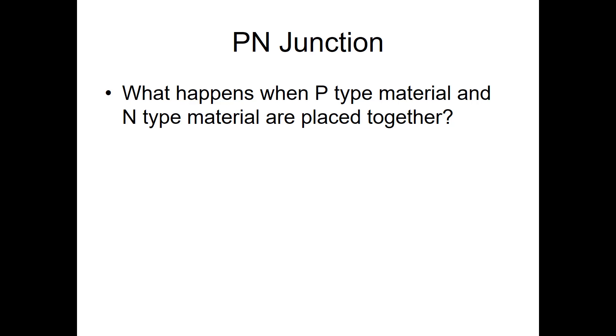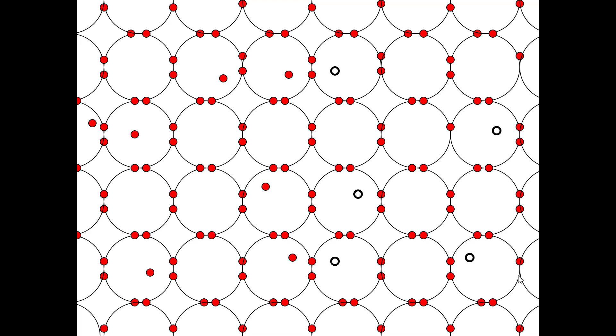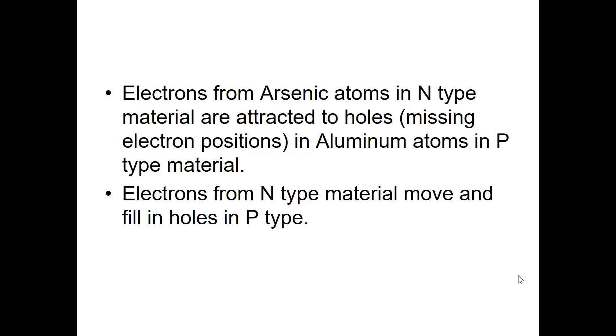What happens when we place a P-type material and an N-type material next to each other? So imagine here's what we have. When we place them next to each other at the interface or the boundary, atoms that have the extra electrons, those electrons can move to the atoms that are missing electrons and fill up those holes. So electrons from arsenic atoms in the N-type material might be attracted to holes in the aluminum atoms in the P-type material. So the electrons from the N-type move to the holes in the P-type.